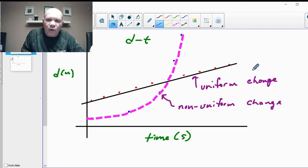When you have uniform change, you can take the slope of the line and that will give you the average of whatever it is you're calculating. So here, the slope equals the average.